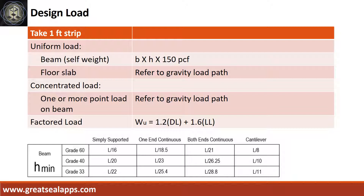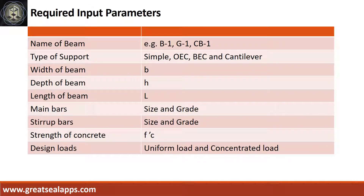Check deflection control from the given ACI table. Enumerate the input parameters required: name of beam, such as B1, G1, or CB1.